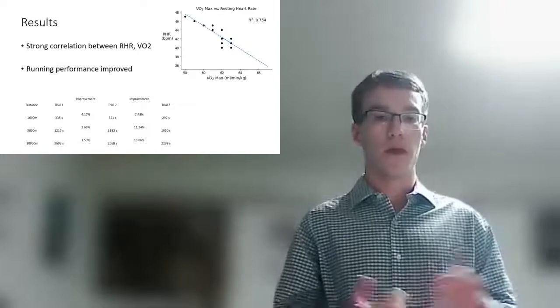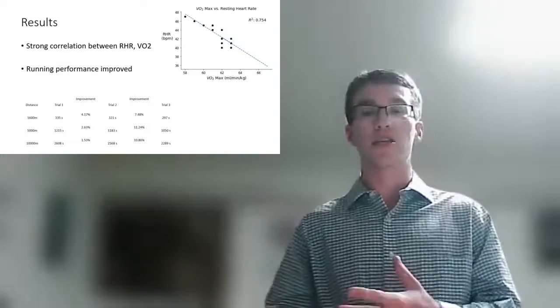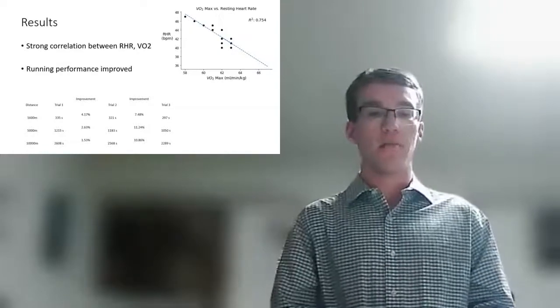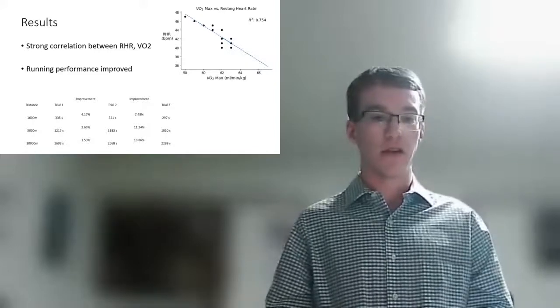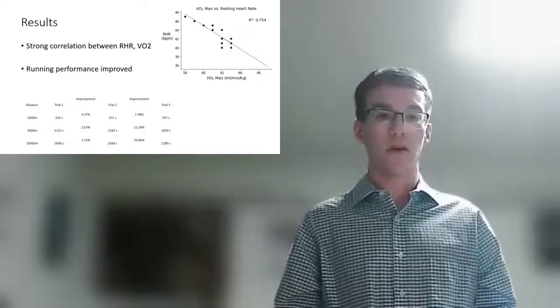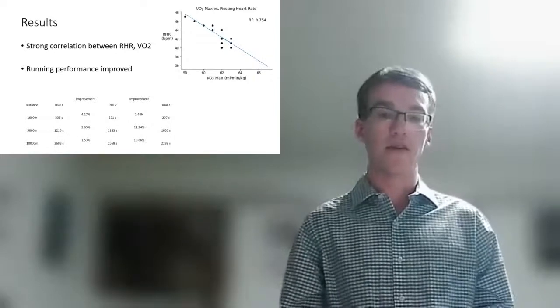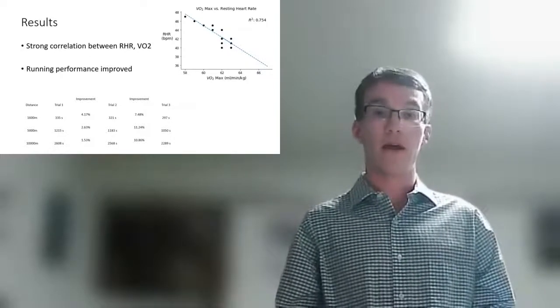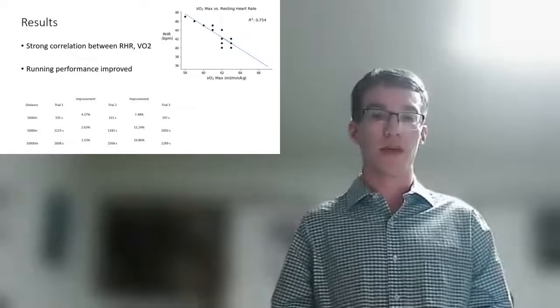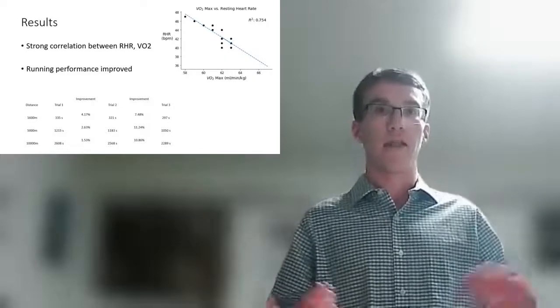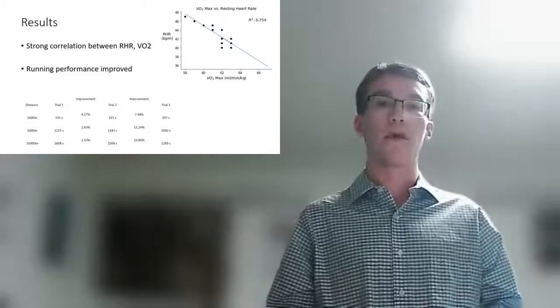What I was able to find from this was that as I generally became more fit, my VO2 max increased and resting heart rate decreased. And over the summer, as you can see in the table below, my running performance also increased. It increased a little bit between the first and the second time trial, and then much more significantly between the second and the third as I became in even better shape.